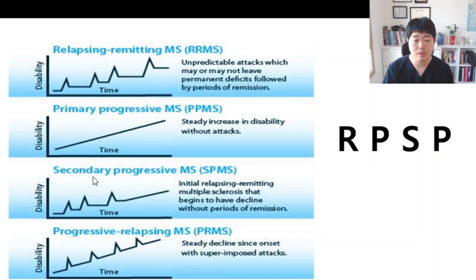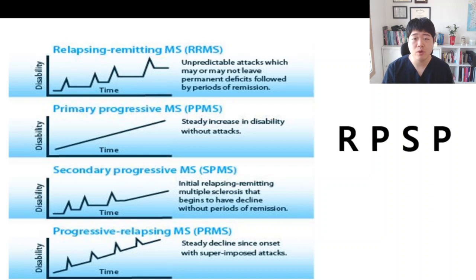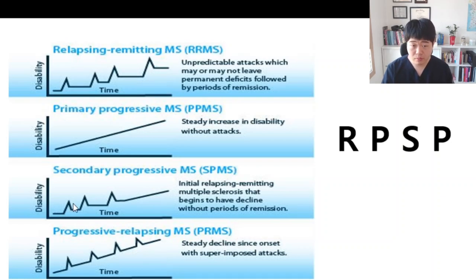Third is Secondary Progressive. Initially it seems there is recovery, but after the initial phase, there is no recovery anymore — like primary progressive. So it's getting worse after the recovery periods, then steadily worse.